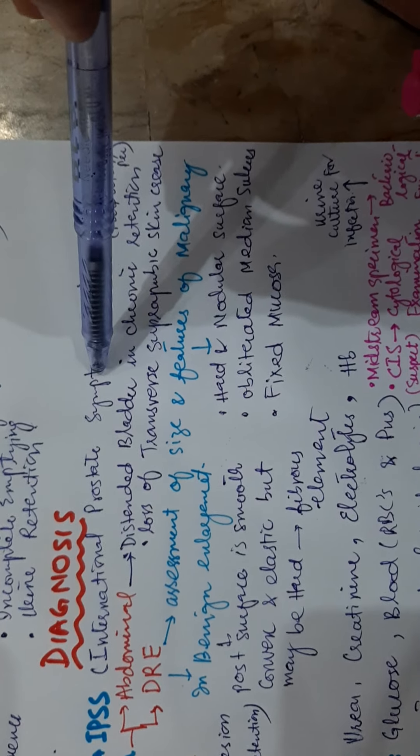In benign enlargement, the posterior surface is smooth, convex, and elastic but may be hard due to fibrous elements. Rectal mucosa can be made to move over the prostate, and residual urine may be felt as a fluctuating swelling above the prostate. It should be noted that if considerable amount of residual urine is present, it pushes the prostate downward, making it appear larger than it is.